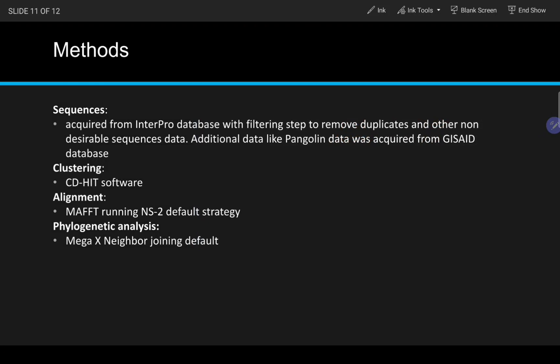Quite briefly, the methods for this article were all done through software, so that makes my job here very easy. The sequences were acquired from the InterPro database with filtering step to remove duplicates and other non-desirable sequence data. Additional data for pangolin viruses was acquired from the GISAID database. Clustering was done by the CD-HIT software, alignment by MAFFT running the NS2 default strategy, and phylogenetic analysis from the MegaX program neighbor joining default.